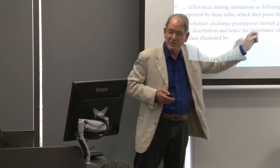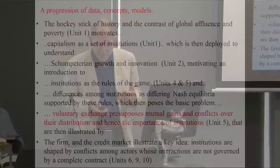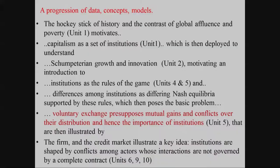Hence the importance of institutions: they determine whether or not all the mutual gains will actually be exploited — that is, whether we'll have an efficient outcome — and also how those gains will be distributed. That's introduced in Unit 5, and then illustrated by the other kinds of institutions introduced later in the course: the firm, credit markets, and other chapters. These are illustrations of cases in which people come together because of the mutual gains, but then have to work out how they're going to share those gains and how that is influenced by the institutions under which they're interacting.